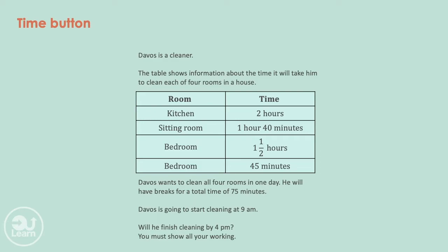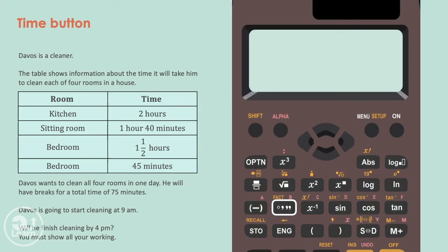To answer the question, we have to add all the times together that it takes to clean all four rooms, plus the time he will take for break. To do this using our calculator, we type 2 followed by our time button to represent two hours. Plus 1 followed by the time button, and then 40 followed by the time button again. For adding one and a half hours, we can type 1.5 followed by the time button.